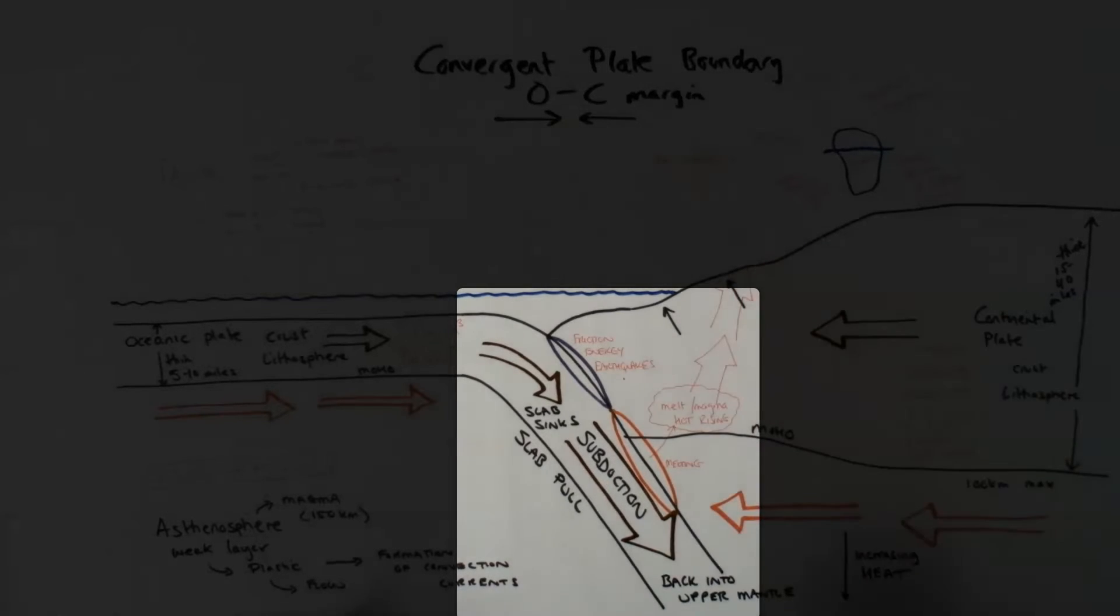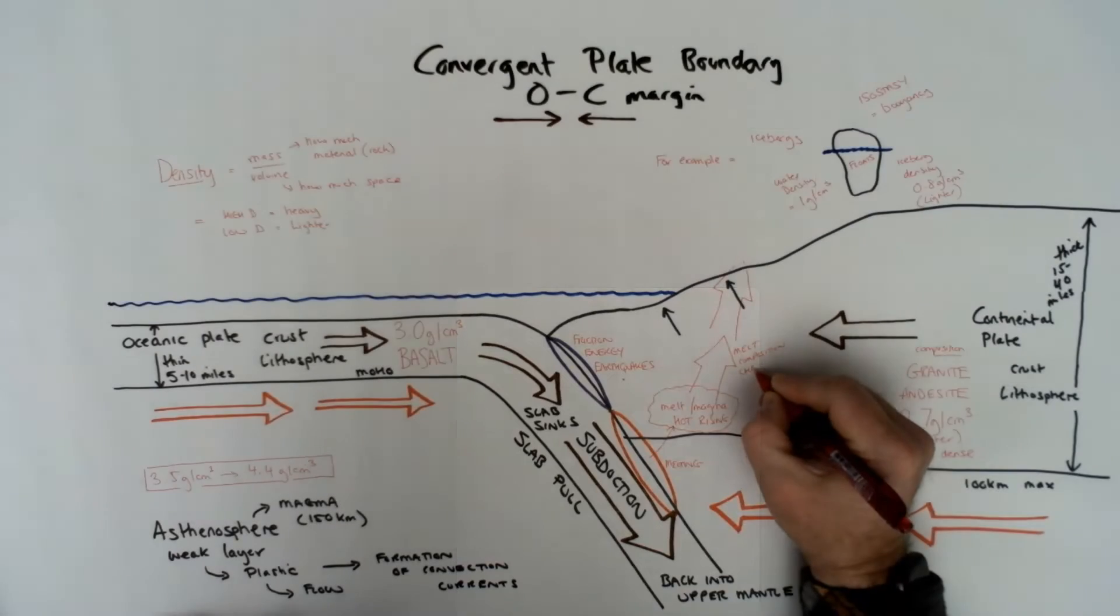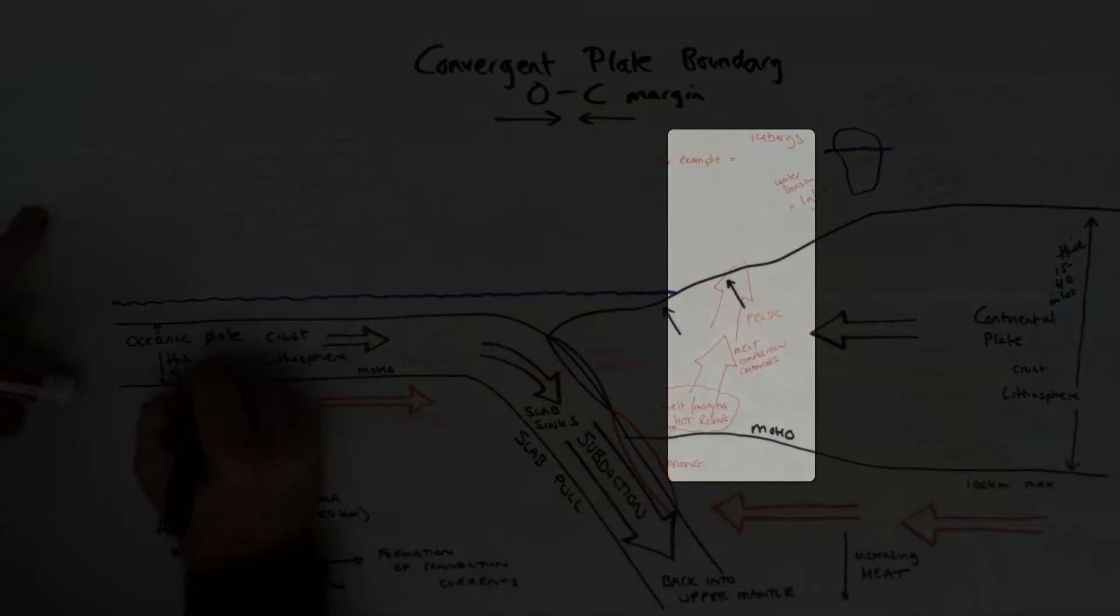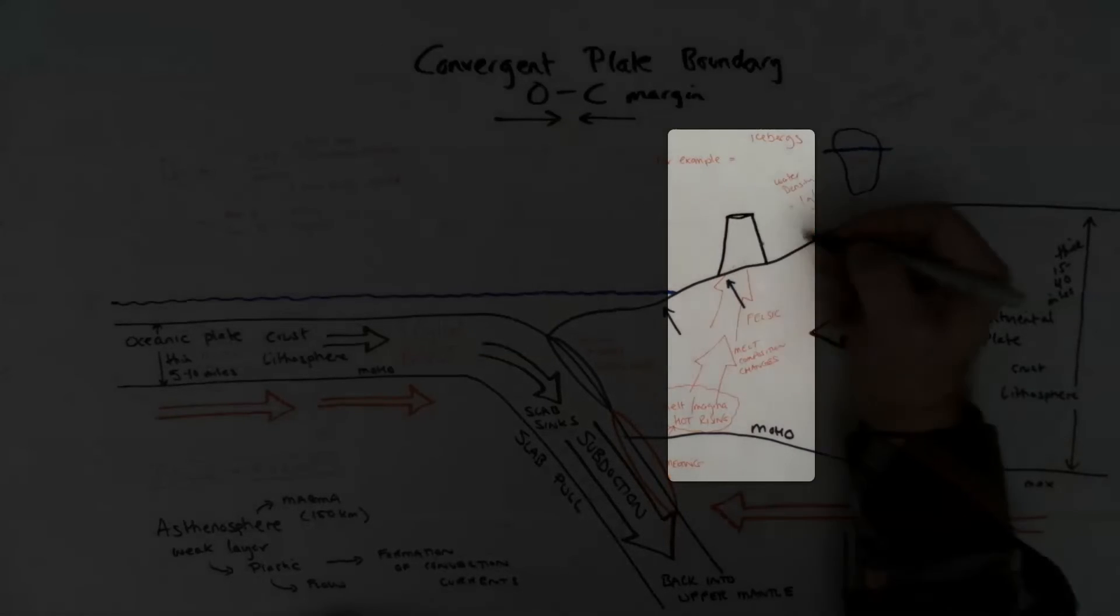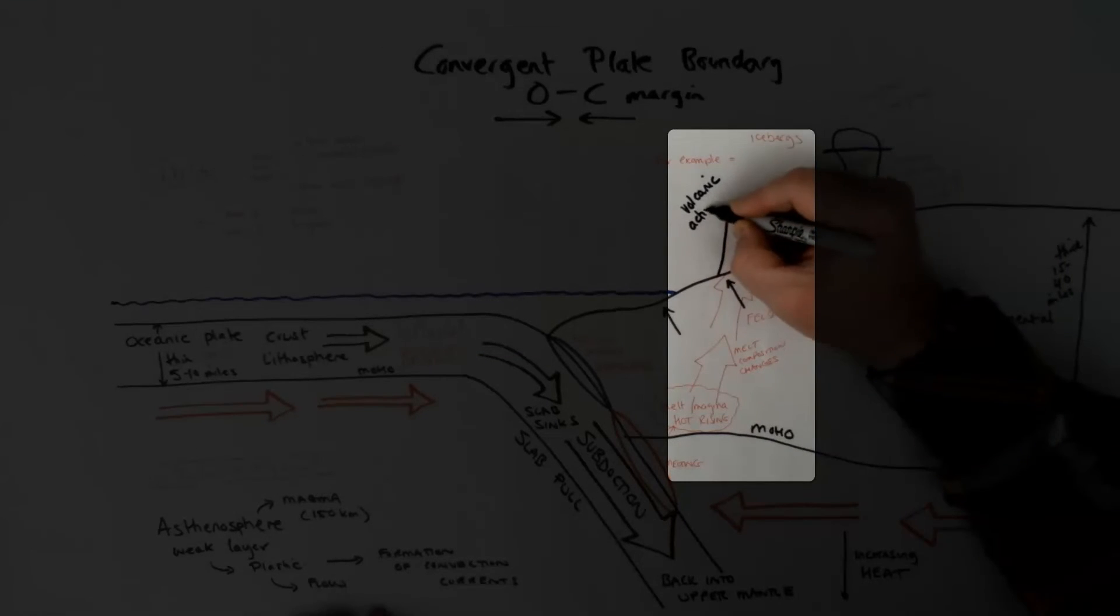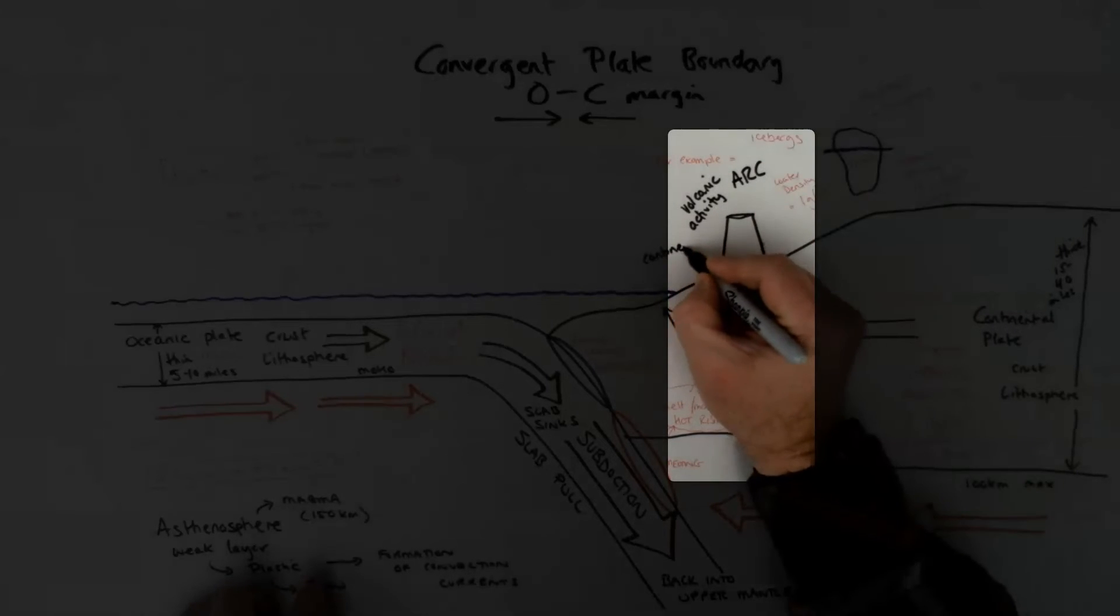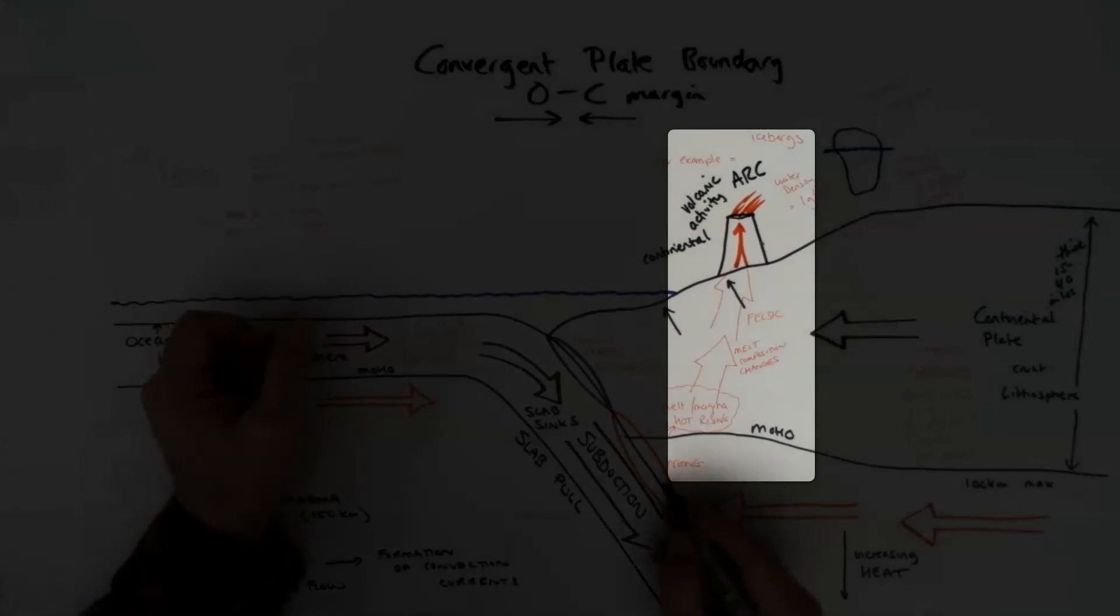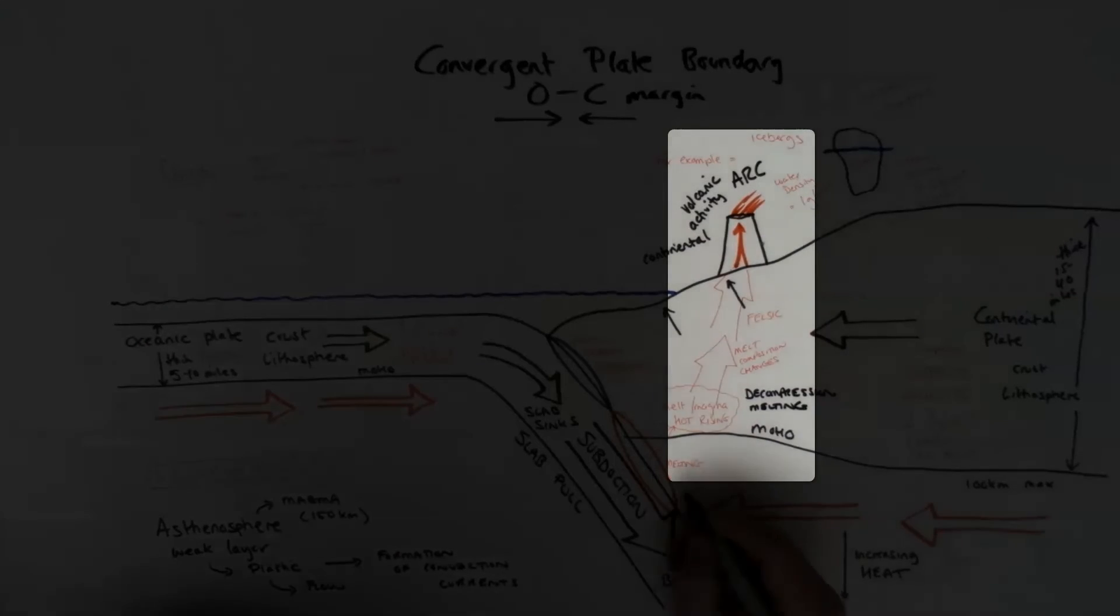So the formation of magma from the melting of the descending plate and the continental plate forms within the continental plate itself and rises up, melts through, burns through the continental plate on its way up as it's hot and it's rising and less dense and more buoyant. And it reaches the surface and forms a chain or an arc of continental volcanic activity. And this is close to the coastline, and there's a constant supply of magma from this subducting plate and the continental plate melting, and there's a constant flow and volcanic activity.